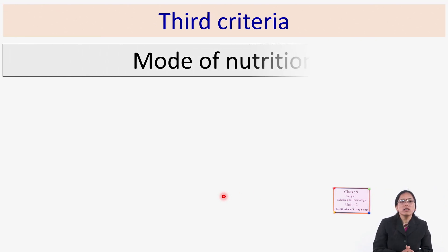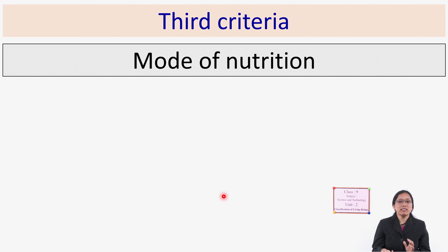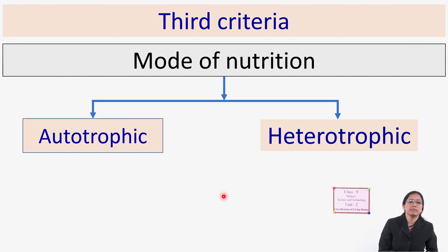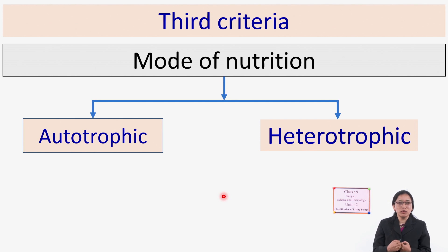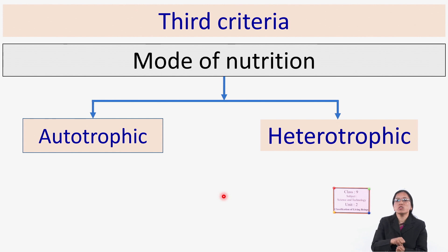The third criteria is mode of nutrition — the process of taking food and getting energy from it. Based on mode of nutrition, organisms are widely divided into two groups: autotrophic and heterotrophic. Autotrophic means self-food-making — those that can prepare their own food. Heterotrophic means obtaining food from others — those that cannot prepare their own food.